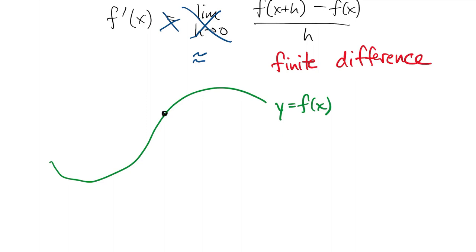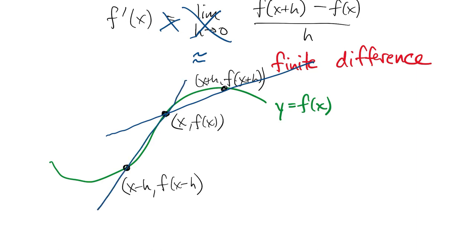We've used this approximation before. It's the secant line approximation of the tangent line. Of course, there are many ways to draw a secant line. If we use the points x and x minus h instead, then we get a new finite difference formula.